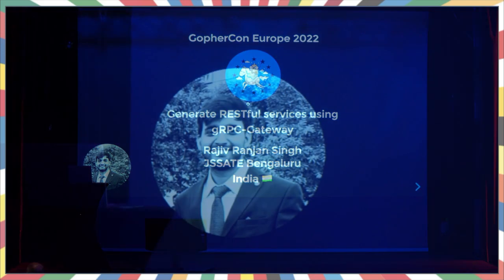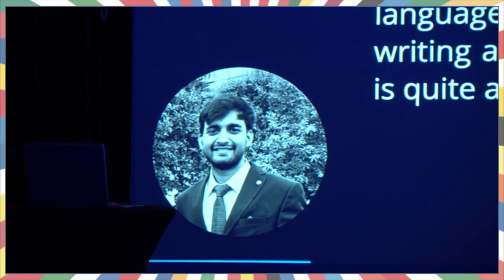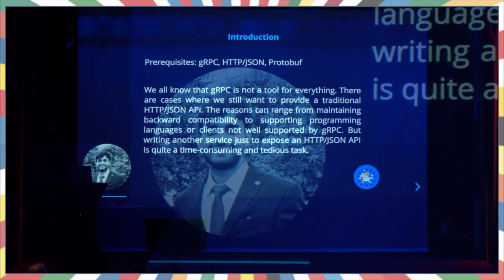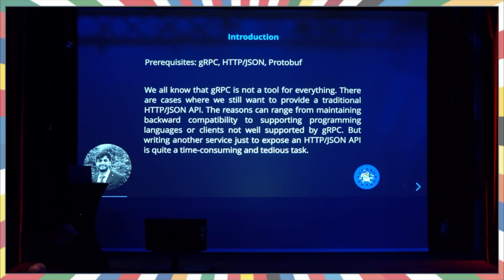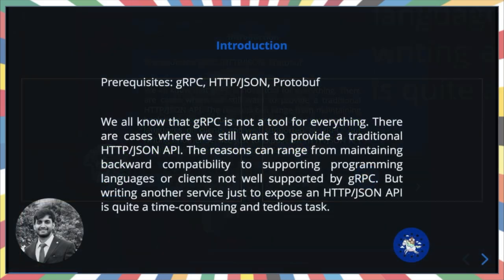The prerequisites of this talk are gRPC, HTTP/JSON, and protobuf. We all know that gRPC is not a tool for everything. There are cases where we still want to provide a traditional HTTP/JSON API. The reason can range from maintaining backward compatibility to supporting programming languages or clients not well supported by gRPC.